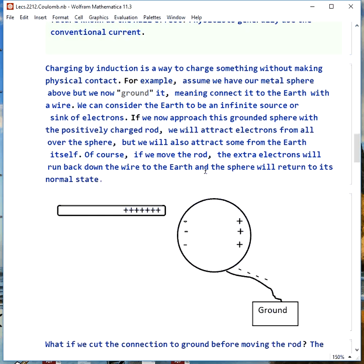If we charge things by induction, that's a way to do it without making physical contact and leave a permanent charge. So let's take our metal sphere from above and ground it, and that literally means connected to the ground, because we can think of the Earth as being an infinitely large source or sink of electrons. So we can put as many electrons as we want into the Earth or draw as many as we want out.